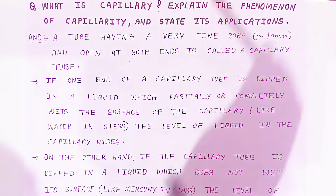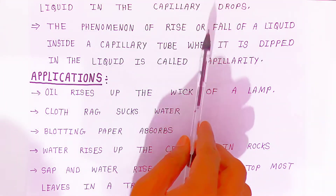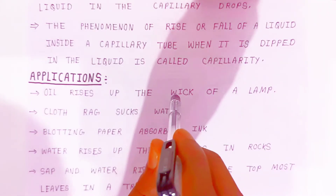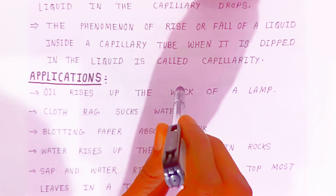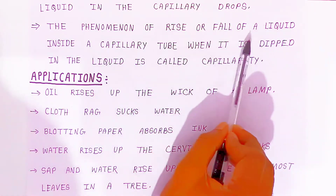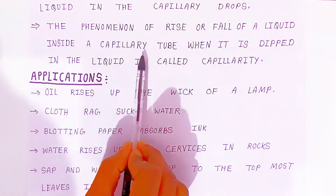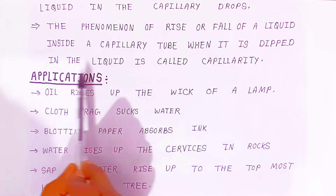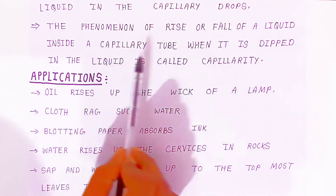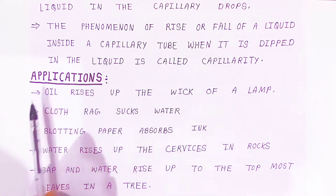When you dip the capillary tube inside mercury, the level of mercury present in the capillary tube will always be less than the level of mercury outside. The phenomenon of rise and fall of liquid inside a capillary tube when it is dipped in a liquid is called capillarity.